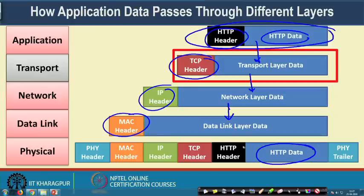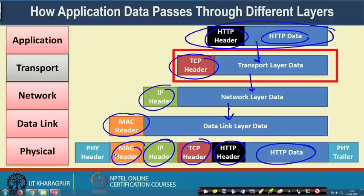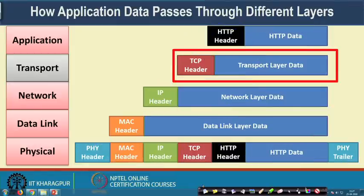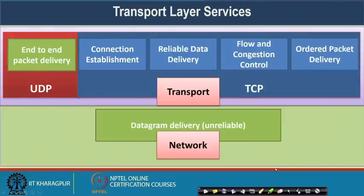The data link layer adds its own header, and the physical layer adds a physical header — and for some protocols, also a trailer to identify an end-to-end frame. That way the entire frame gets delivered over the network. Looking at why we require the transport layer: just below it is the network layer, whose functionality is to ensure datagram delivery.